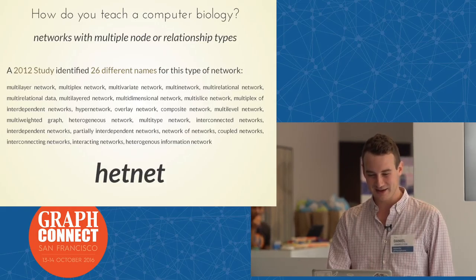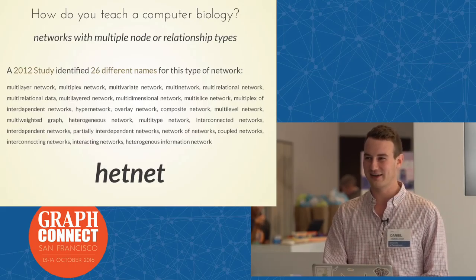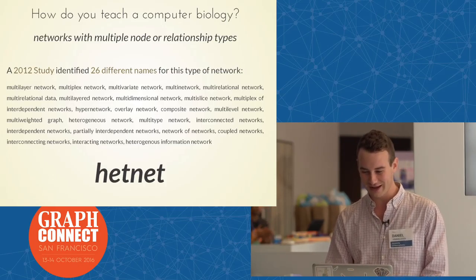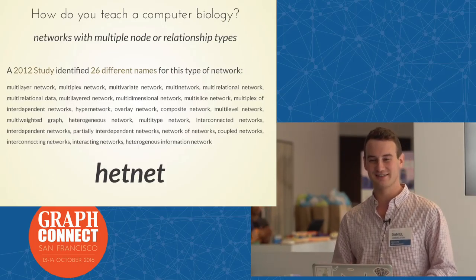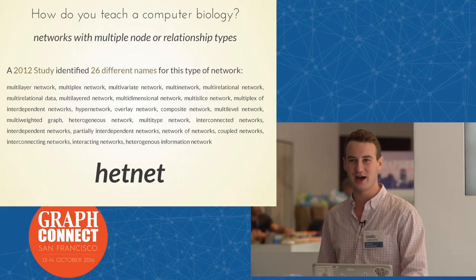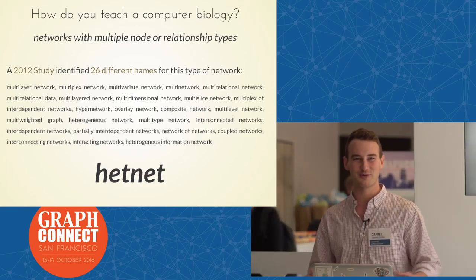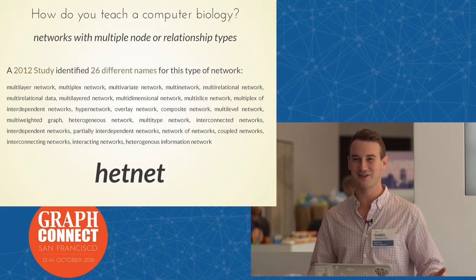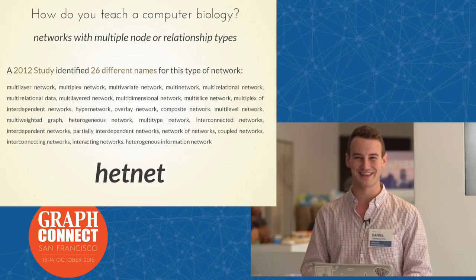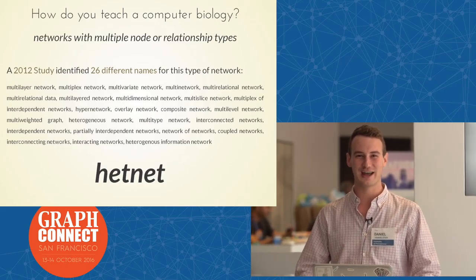Back in the day we had a little problem: there were at least 26 different names for this type of network, such as multi-layer network, multiplex network, overlay, composite, multi-level, heterogeneous network, heterogeneous information network. The studies we built on were using 'heterogeneous information network.' We thought that name was too long and no one would ever want to work in a field called that. So what do you do when you have 26 different terms you don't like? You make a 27th. We call our data structure a HETNET, short for heterogeneous network.